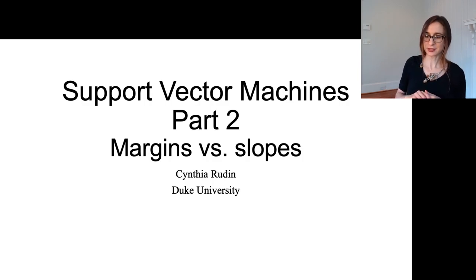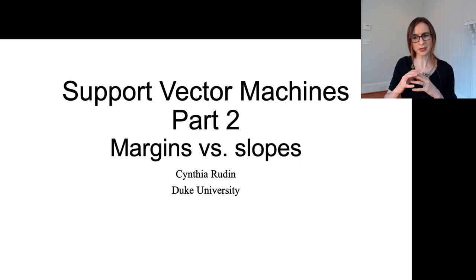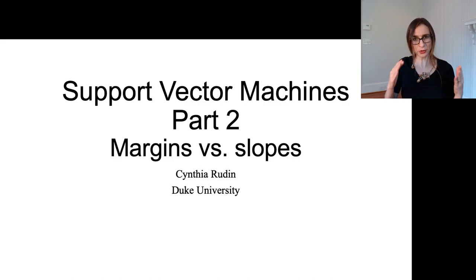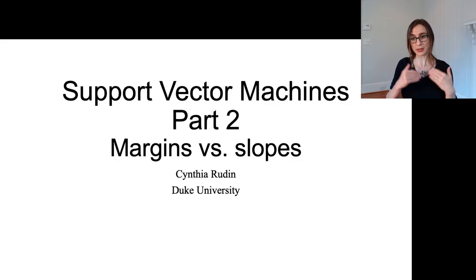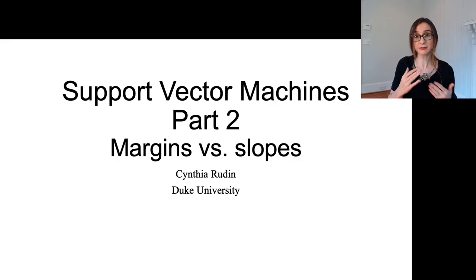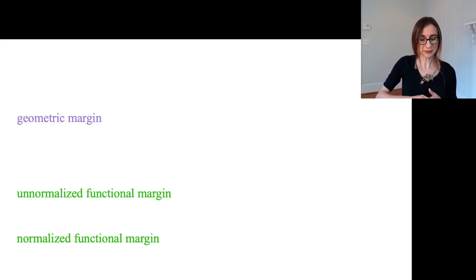I want to continue this discussion about how the margins are inversely related to the slopes, or the norms of the function. I also want to talk a bit more about how this problem, or the way we originally formulated it, is ill-posed, because there are many functions that have the same decision boundary. So let's start with some definitions.